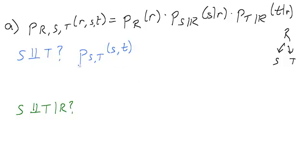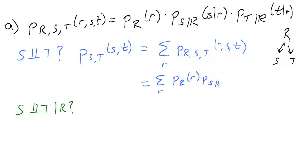How do we compute the distribution of PST from PRST? We just have to sum over every possible value of R in the original. And this becomes sum over R, PR times PS given R times PT given R.